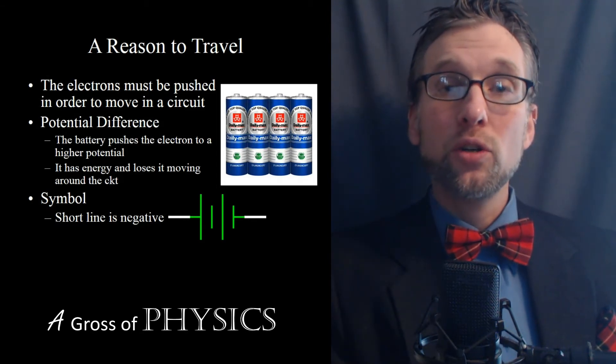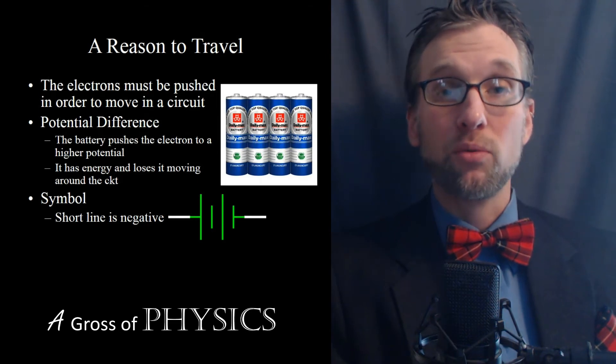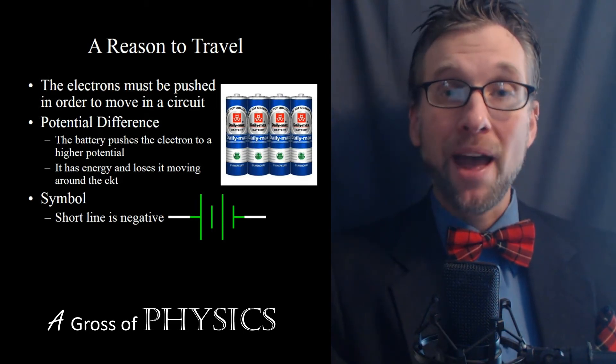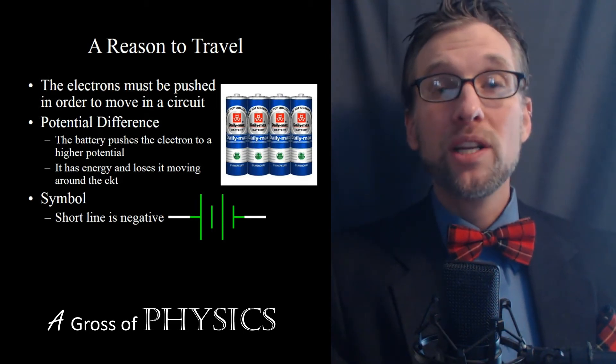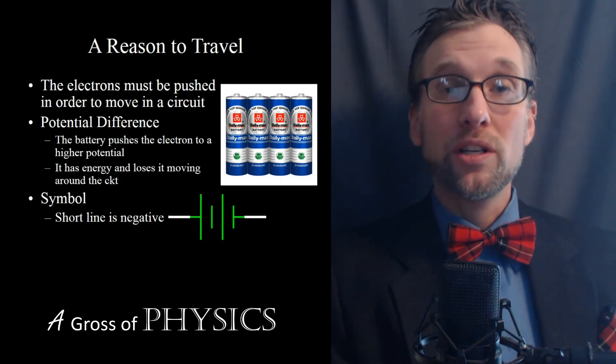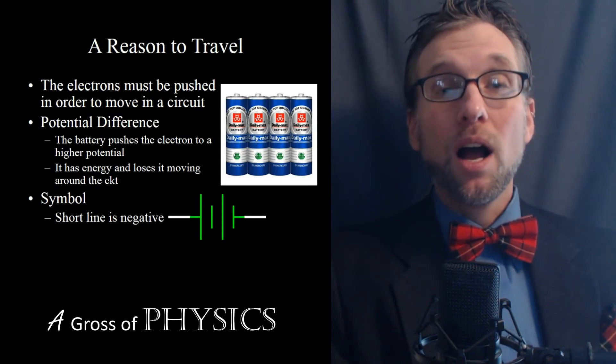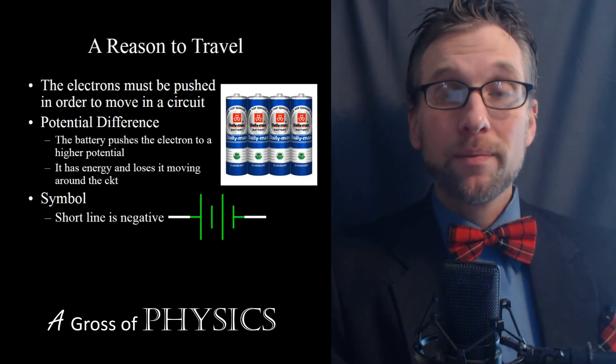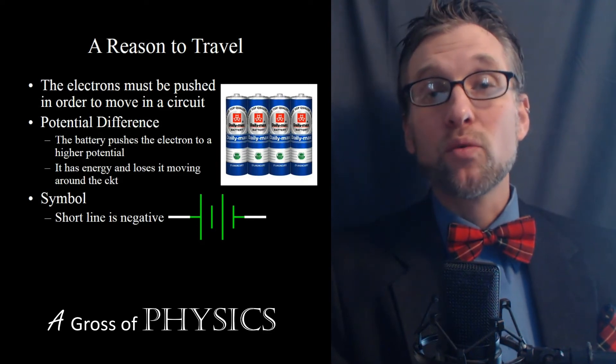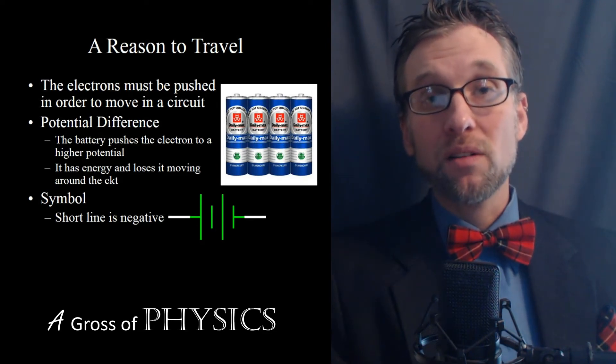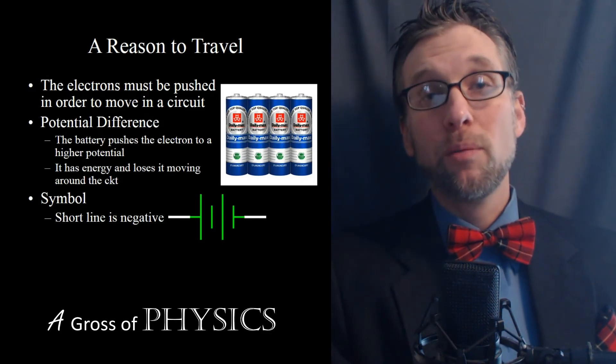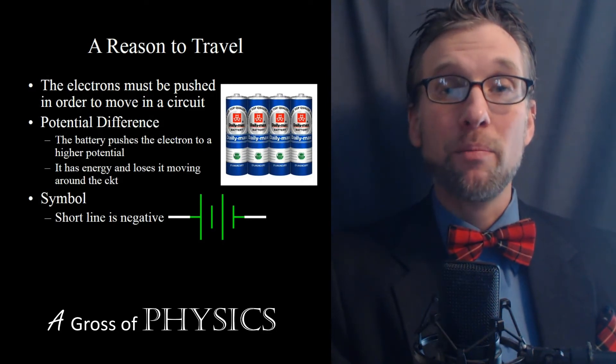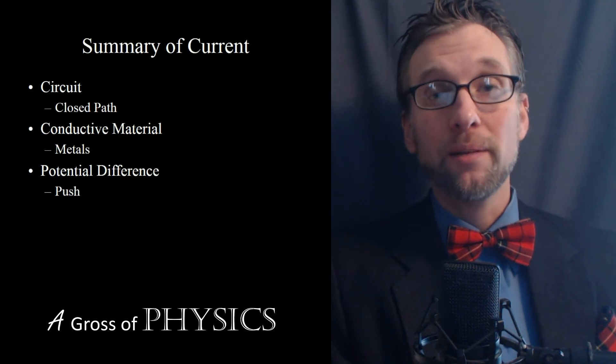So in order for current to flow in the first place, we need three things. We need to have a complete path, which we call a circuit. We need to have a conductor, which is typically a metal, so we need to have a wire. And then we need to have a reason for the electrons to flow themselves, and that is the push in the circuit, which is typically provided by a battery, a power supply, or the wall outlet.